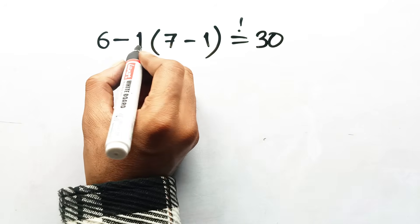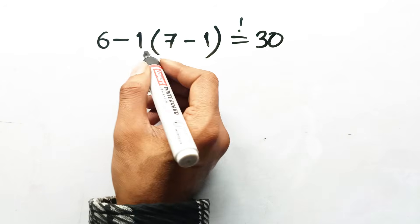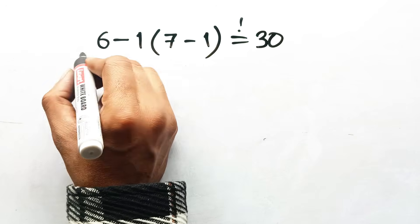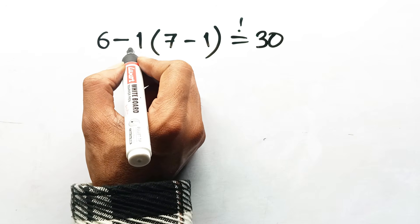6 minus 1, 7 minus 1. At first glance, it looks pretty simple, right? And I get it. This is exactly where most people slip.